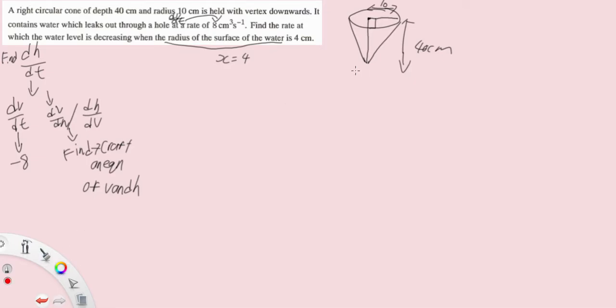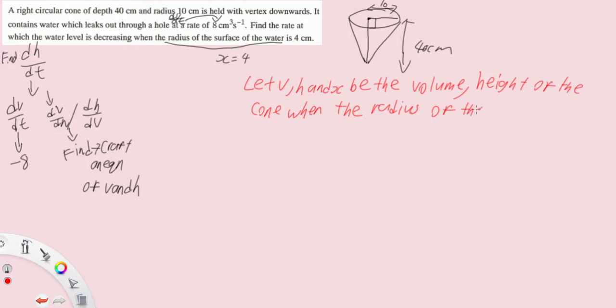Going back to this diagram, first we define our variables. So let v, h and x be the volume, height of the cone when the radius of the surface of the water is x cm respectively. This was important unless you want to rewrite both sentences again which is a pain. So obviously what this means is that this is x and then the corresponding height would be h.